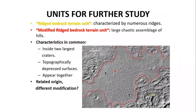Here we see two reticular units next to each other. The first one, that we call rich bedrock terrain unit, is characterized by a network of ridges in a polygonal pattern. The second one, that we call modified rich bedrock terrain unit, is in the middle of the image, surrounded by the rich bedrock terrain unit, and is consistent with a large chaotic assemblage of small fields.